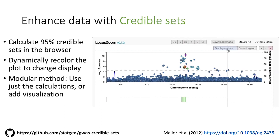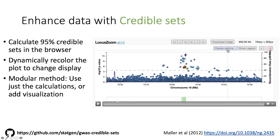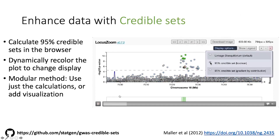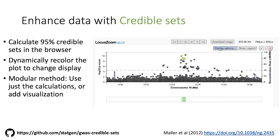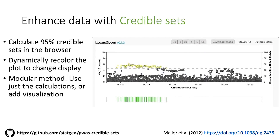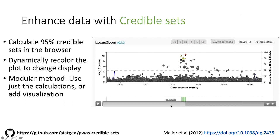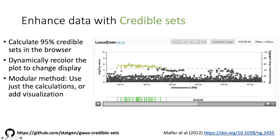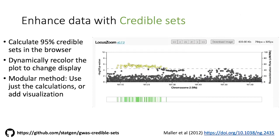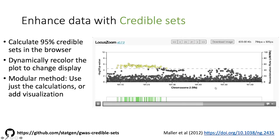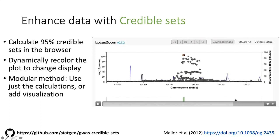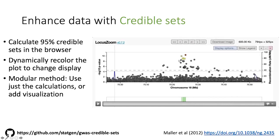We go through and calculate Bayes factors and calculate the final posterior probability, and then LocusZoom can display that in the region. You can show which variants are in the credible set — yes or no — or you can color them by their contribution, essentially their posterior probability. In one example, the inclusion probabilities are contained within only a few variants. In another, there are quite a few variants with a fairly even probability of being in the set. And in a third example, there is a very fine, high inclusion probability.